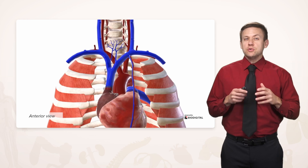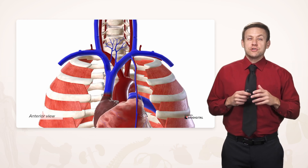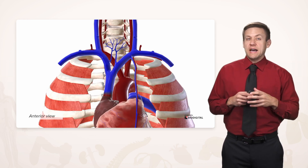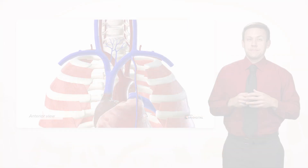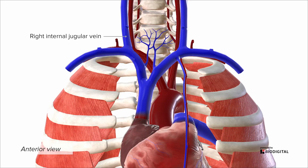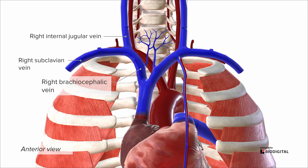We'll start with the superior vena cava, which drains deoxygenated blood from the upper half of the body. We have a right internal jugular vein draining the head and neck, and a right subclavian vein draining the right upper limb. Together they'll form the right brachiocephalic vein — brachiocephalic referring to upper limb and head — and finally that will enter into the SVC.